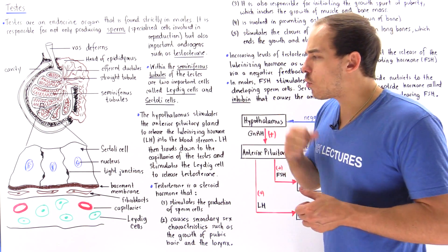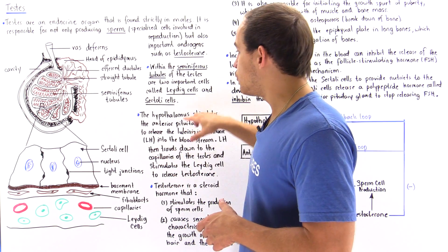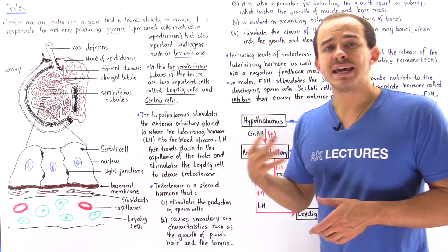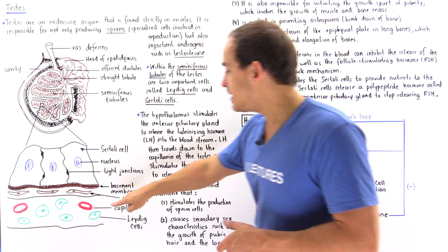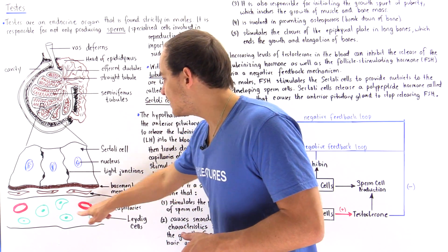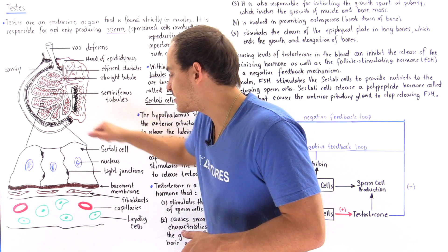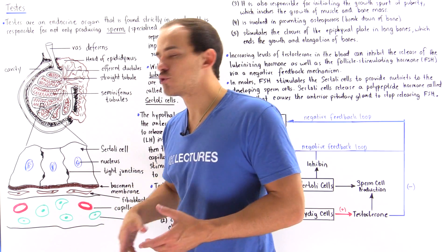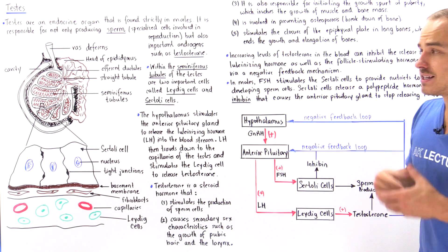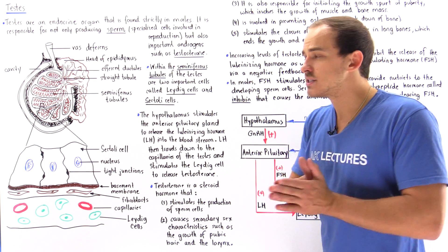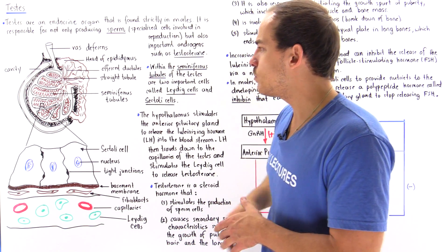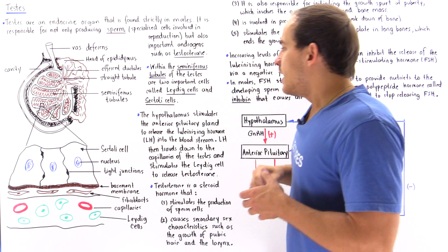The other important type of cell we need to know is the Leydig cell, also known as the interstitial cell. These Leydig cells are shown in green. So we have the Leydig cells, we have the Sertoli cells, and we also have these red structures which are the capillaries that bring not only nutrients and oxygen, but also important types of hormones to our testes — to our seminiferous tubules.